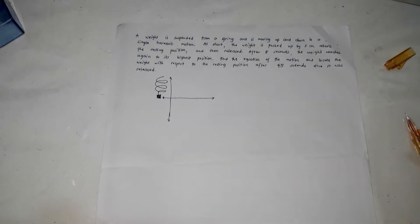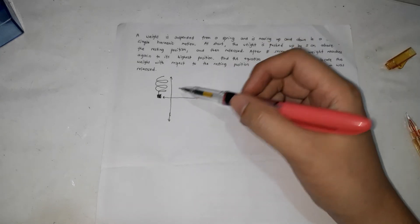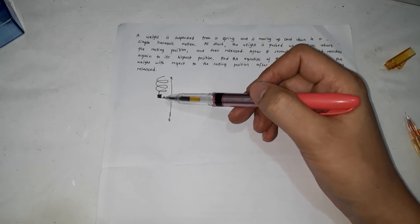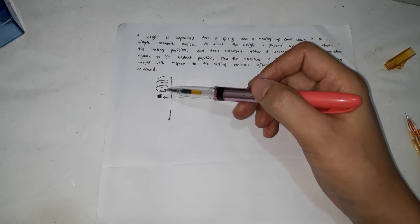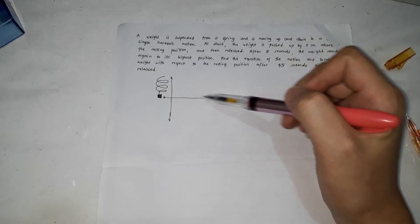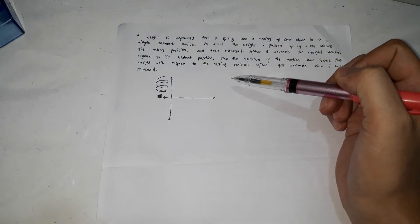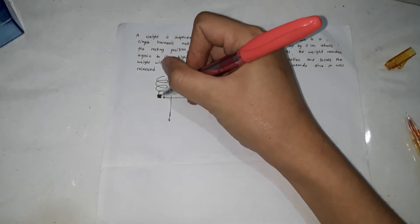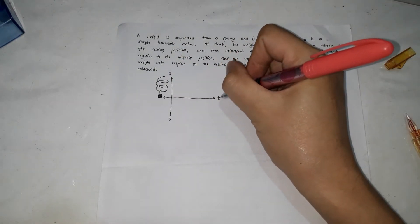At the start, the weight is pushed up 5 cm above the resting position. The resting position is the position where you did not apply force on the spring. We represent the resting position as 0 on the Y-axis, where Y is the distance the weight travels. If it goes up, that's positive distance. The horizontal axis represents time.